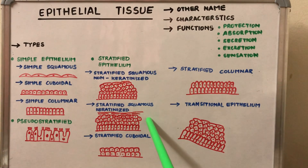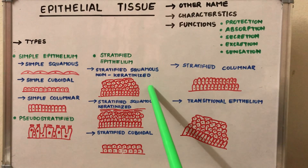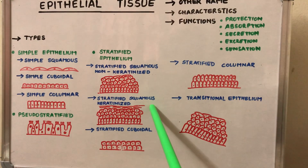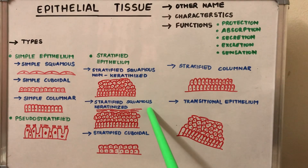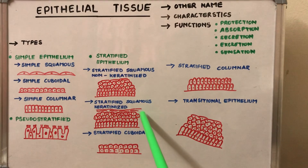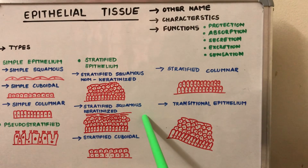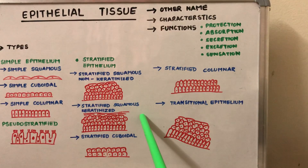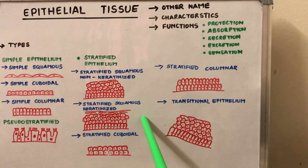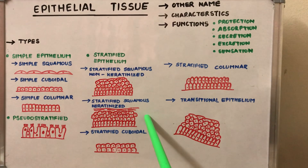The keratinized stratified squamous epithelium is similar to the non-keratinized stratified epithelium, but the only difference is the presence of an additional keratinized layer — a single layer of keratin on the superficial cells. This epithelium protects the exposed and dry surfaces of the body. The most common example in the human body is the skin.